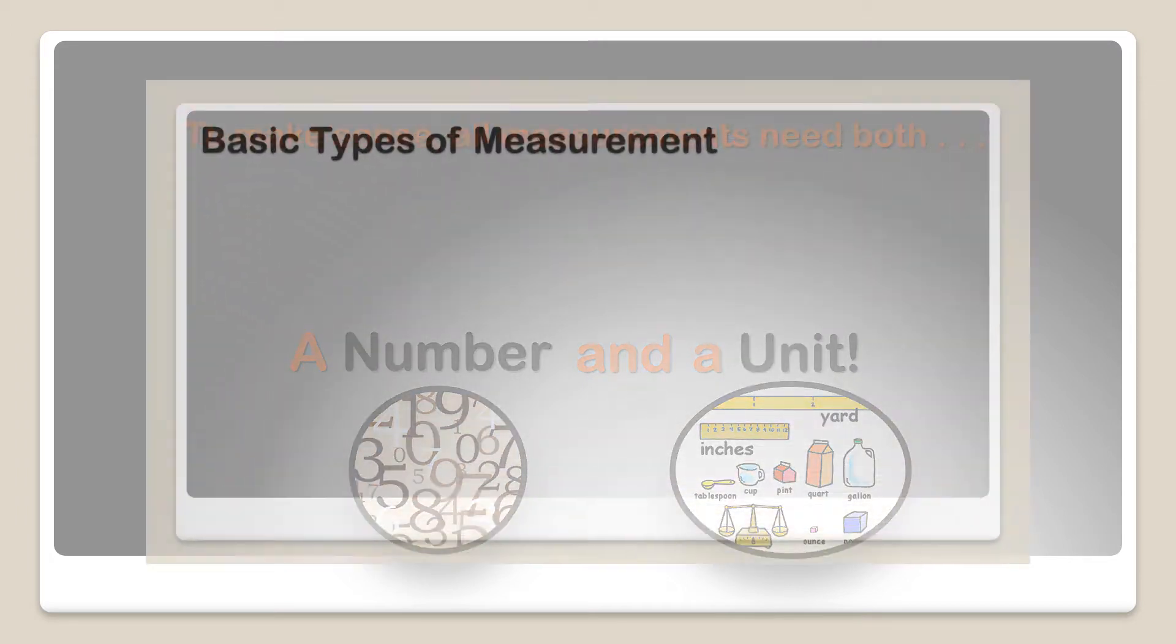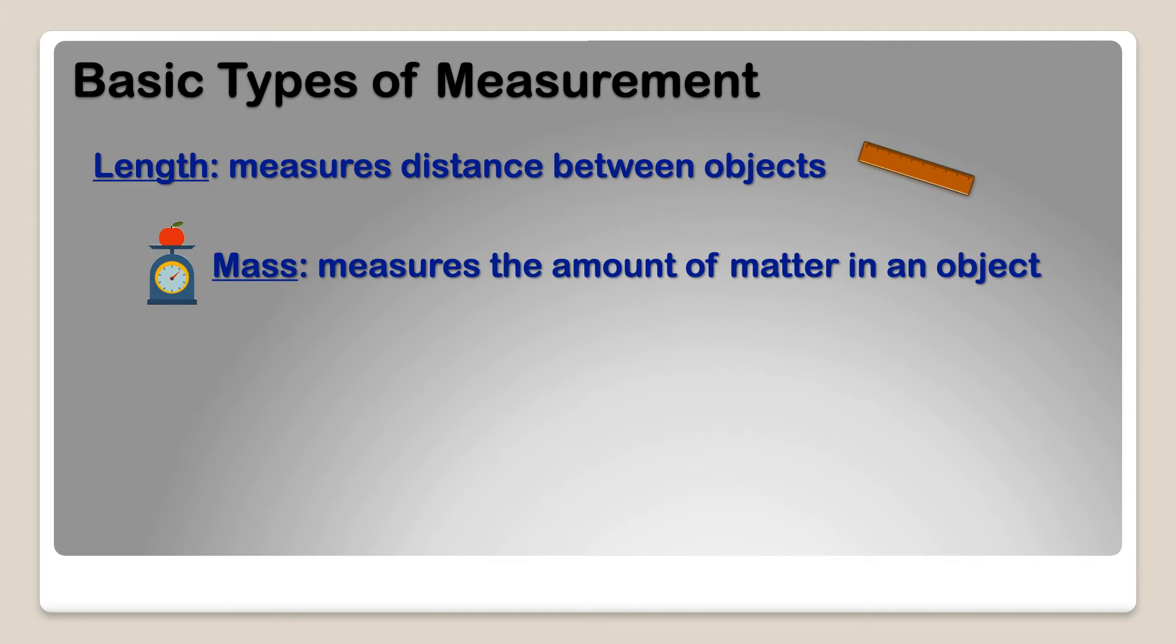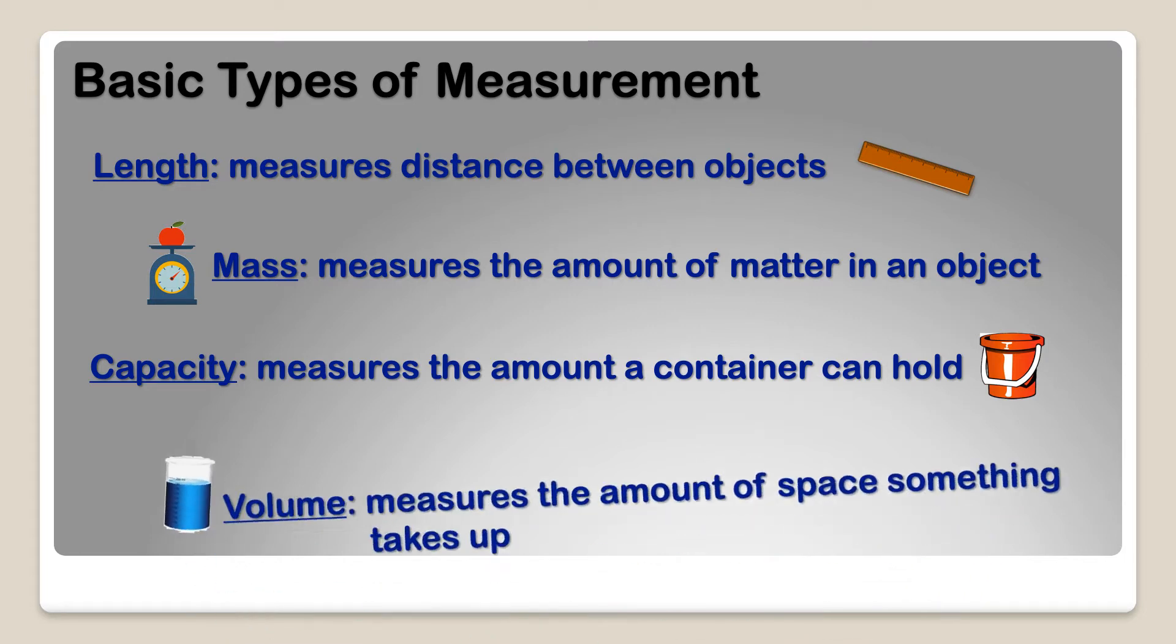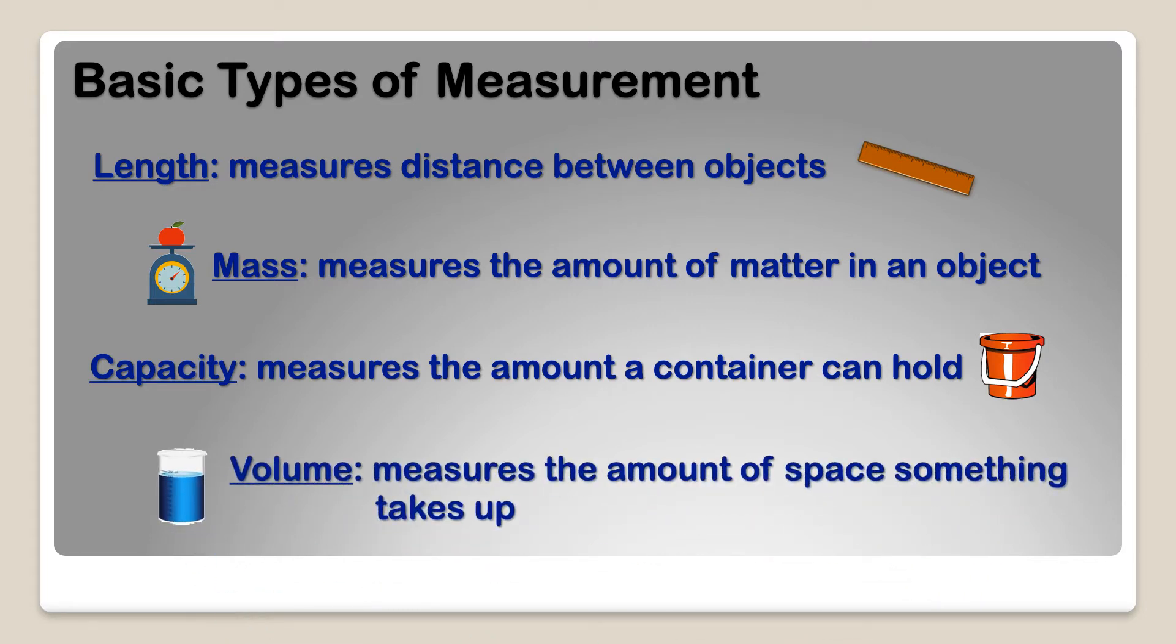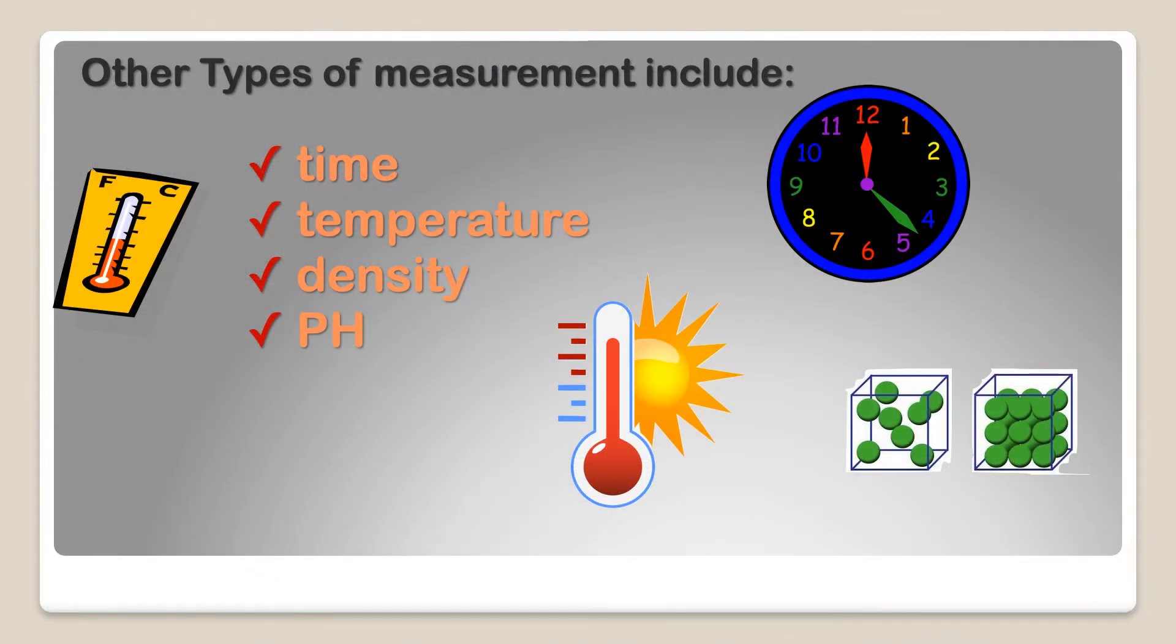Let's look at some basic types of measurement. Length measures distance between objects. Mass measures the amount of matter in an object. Capacity measures the amount a container can hold. Volume measures the amount of space something takes up. But there are other types of measurement.